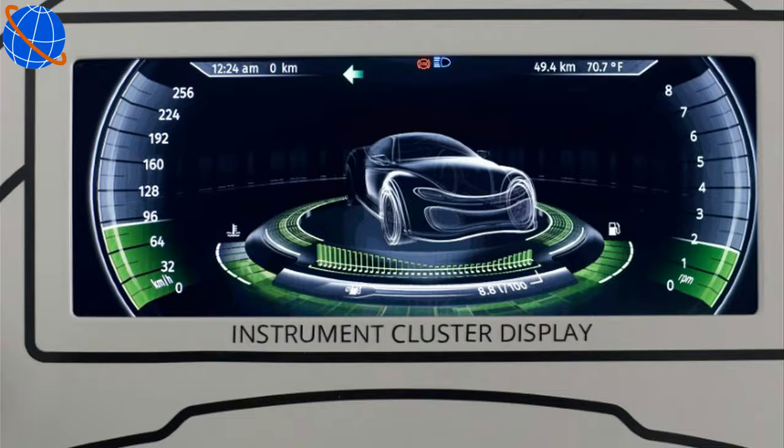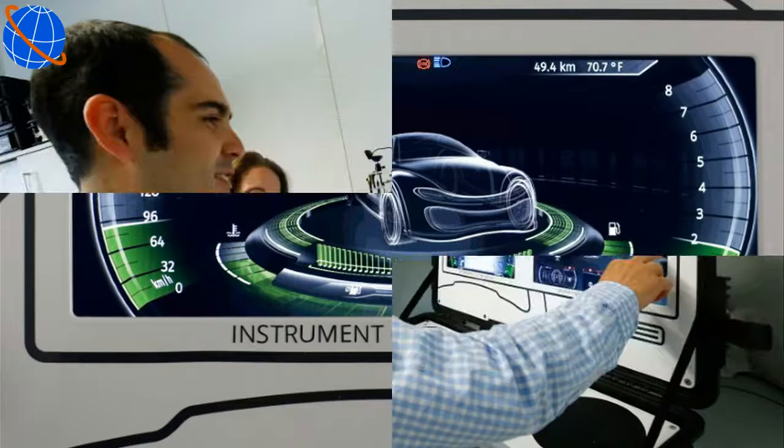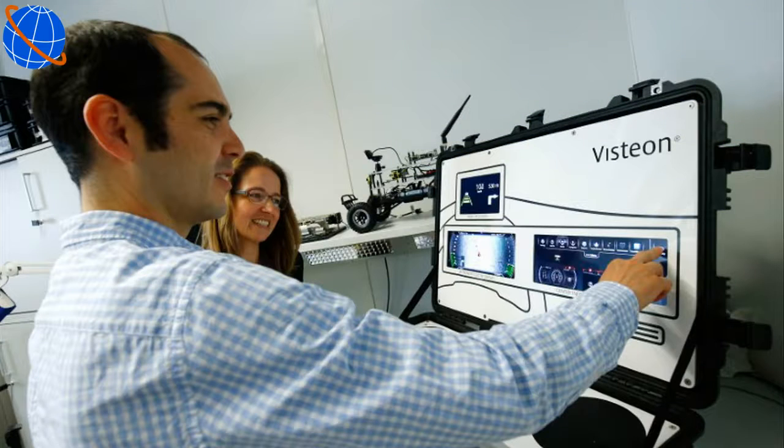Analysts say German automakers are taking the lead in consolidating functions within the dashboard. Audi was the first to debut a virtual cockpit last year that combined its instrument cluster and infotainment system.